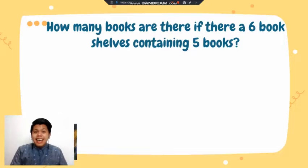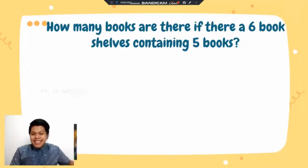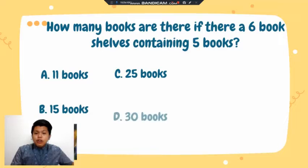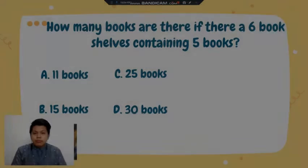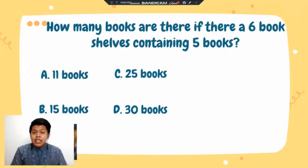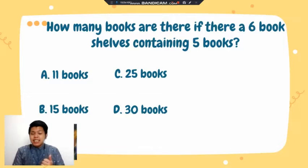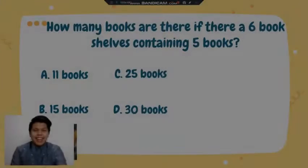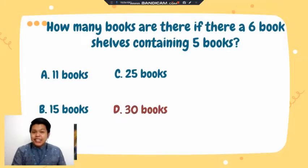How many books are there if there are six bookshelves containing five books each? Is it A: 11 books, B: 15 books, C: 25 books, or D: 30 books? Let's check your answer. For this problem, you will need to multiply: six times five — 5, 10, 15, 20, 25, 30. The correct answer is letter D.